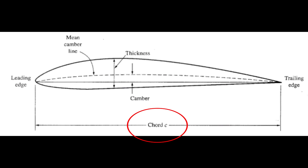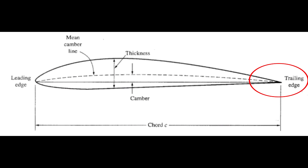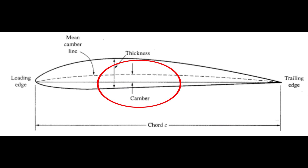The first of these characteristics is called chord length. The chord length is the length of the airfoil from the front of the wing, known as the leading edge, to the back of the wing, called the trailing edge. The curvature of an airfoil is known as camber, and it is usually quantified as a percentage of the chord length.